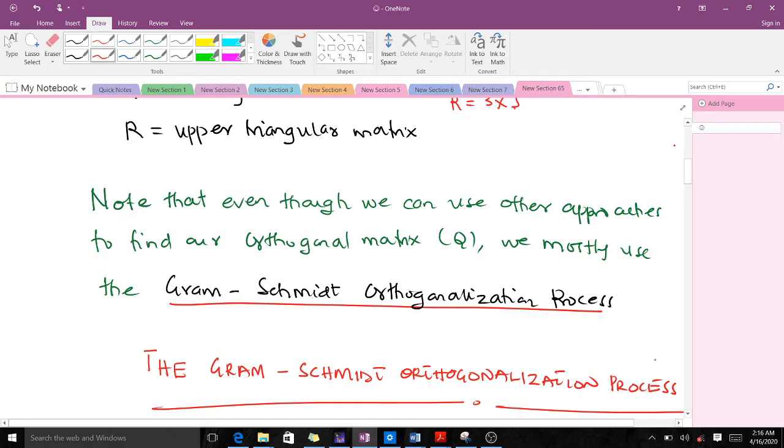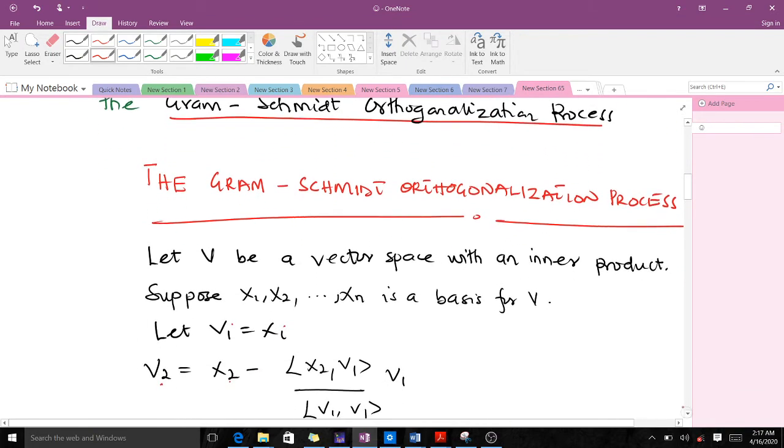Note that even though we can use other approaches to find our orthogonal matrix Q, we mostly use the Gram-Schmidt orthogonalization process. Remember that A is factorized into a product of Q and R, where Q is orthogonal matrix and R is an upper triangular matrix. So mostly getting Q is a bit of work and we use the orthogonalization process. In this case, we're going to use Gram-Schmidt. Let's go through the process.